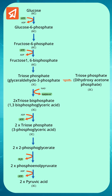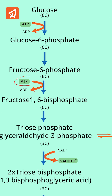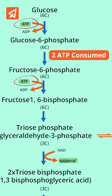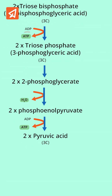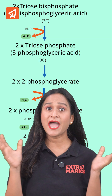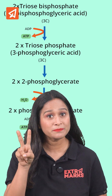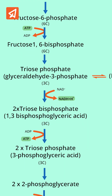So in this process, at step 1 and step 3, 2 ATP are used. And at step 6 and step 9, 4 ATP are produced. So we have a net gain of 2 ATP molecules, and also 2 NADH molecules are produced at step number 5.